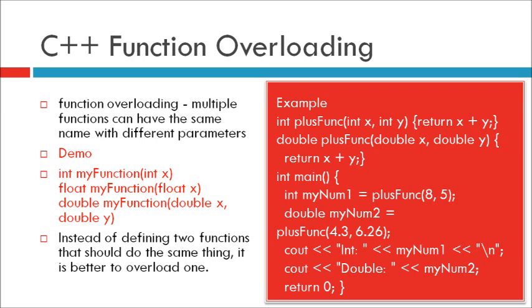Now see cout integer myNum1. Next statement is cout double myNum2. For myNum1, integer parameters function is called, and for myNum2, double parameters function is called.